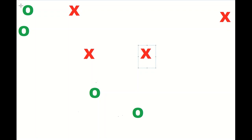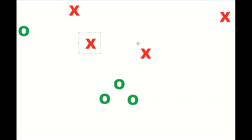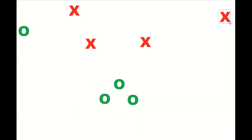A similar concept applies once you add a third receiver in a bunch formation. There are a few different names for it — the one I've most commonly seen is called 'traffic.'